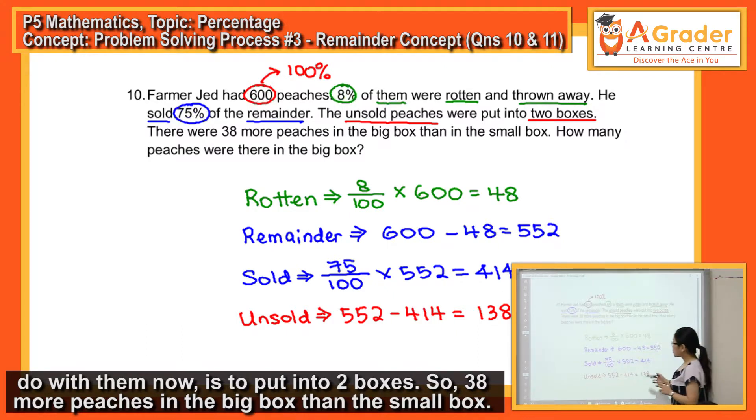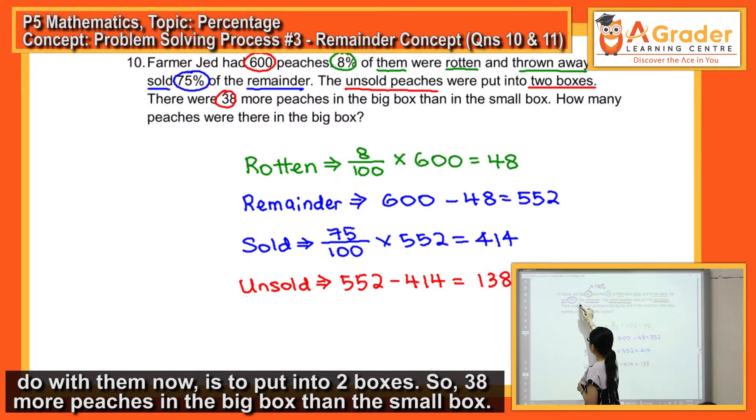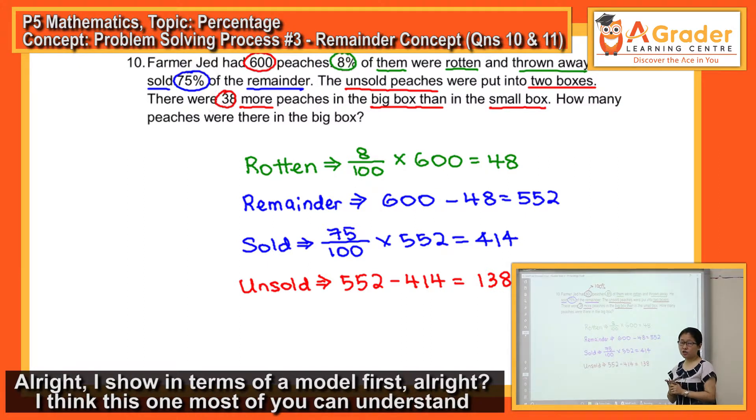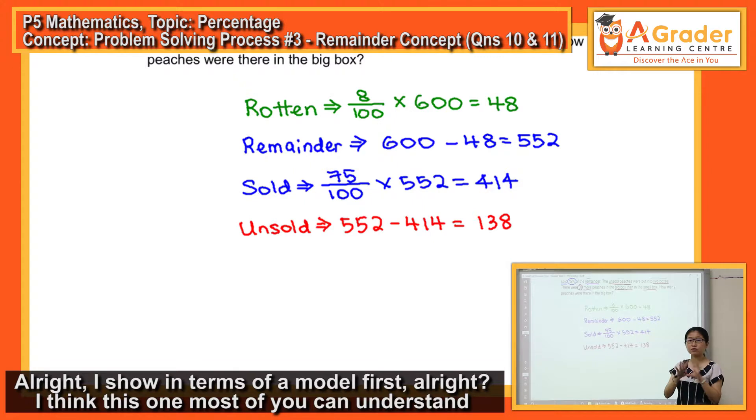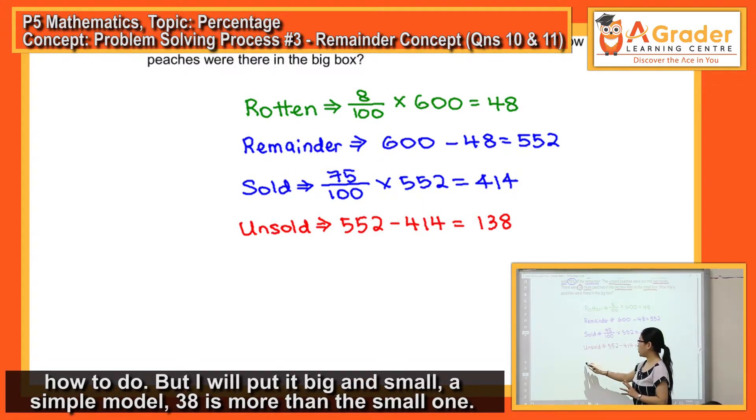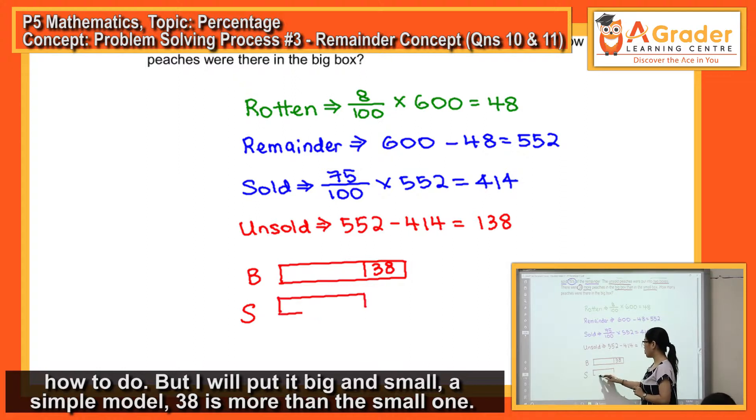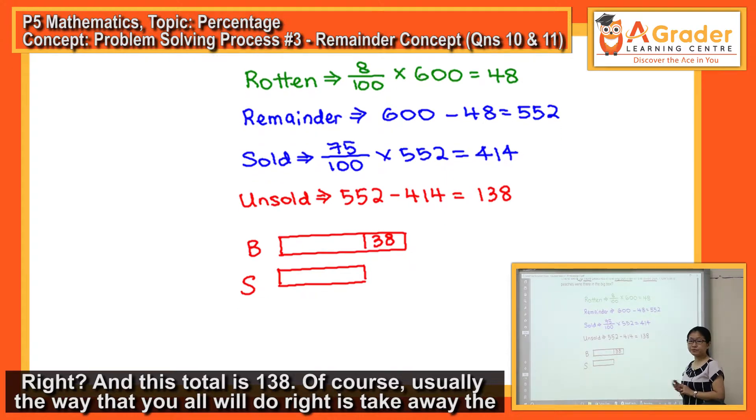So these 138 that are unsold, what he's gonna do with them now is to put into two boxes. 38 more peaches in the big box than the small box. I'll show in terms of a model first. I'll put it big and small, a simple model: 38 more than the small one, and this total is 138.